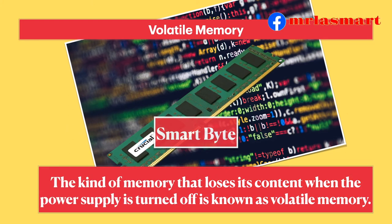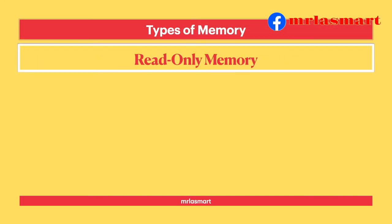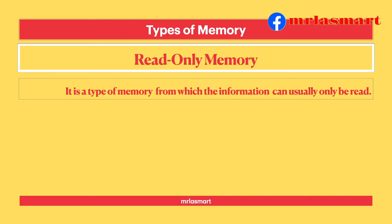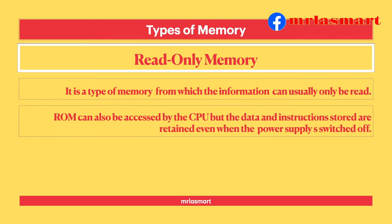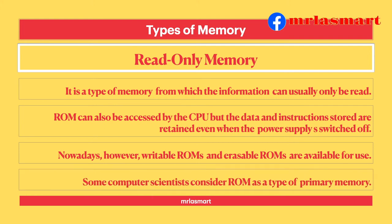When the power supply is turned off, RAM loses its data — it is known as volatile memory. ROM is a type of memory from which information can usually only be read. ROM can also be accessed by the CPU, but the data and instructions stored are retained even when the power supply is switched off. Nowadays, writable ROMs and erasable ROMs are available. Some computer scientists consider ROM as a type of primary memory.